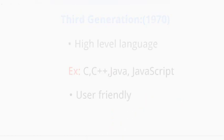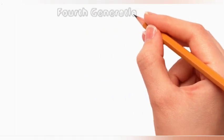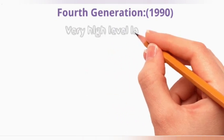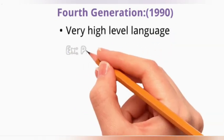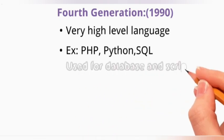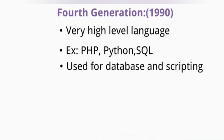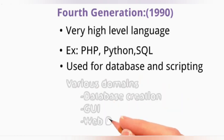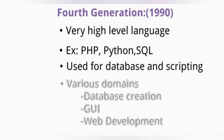Next, we see the fourth generation. This generation belongs to very high-level language and was developed in 1990. Examples: PHP, Python, SQL. These languages are used for both database and scripting purposes. They can be used in various domains such as database creation, GUI, and web development, and are more comfortable than third generation languages.